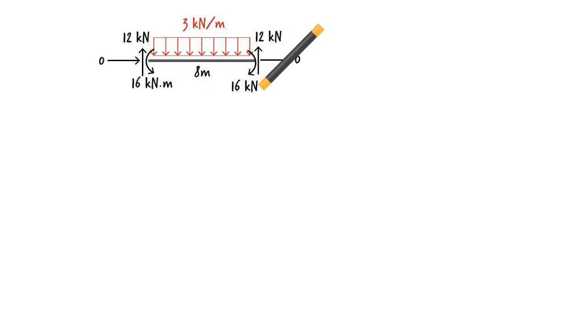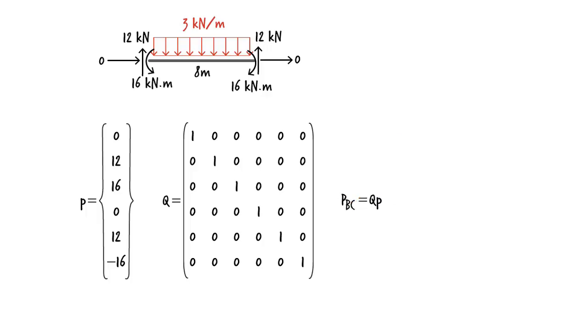We need to do the same for member BC. The member is subjected to a uniformly distributed load of 3 kN per meter, so the fixed end forces are calculated. In matrix form, we can write this. Here the inclination angle is 0, so matrix Q becomes the identity transformation. Multiplying Q by P we get the results. These are the equivalent joint loads for the uniformly distributed load. Let's place them at joints B and C.